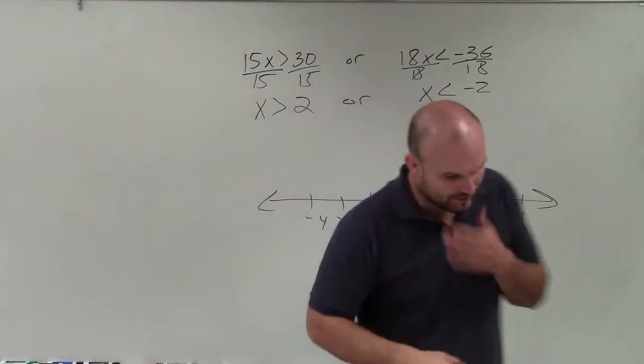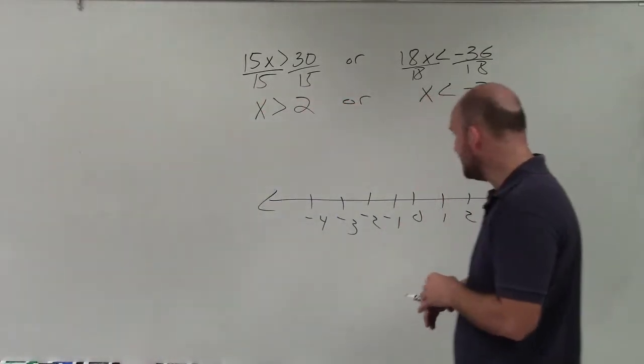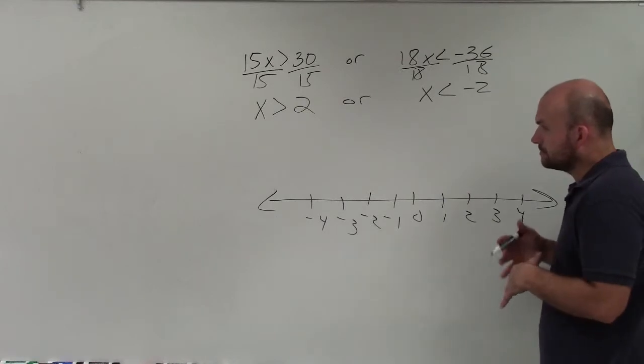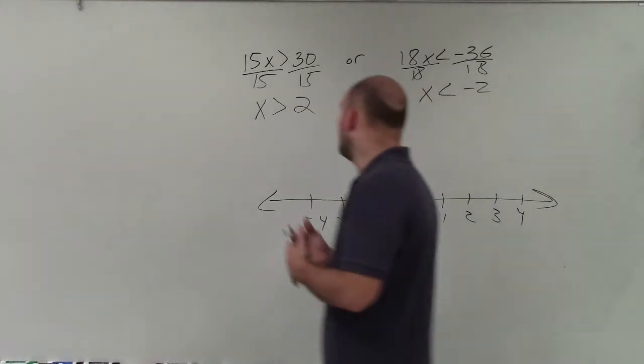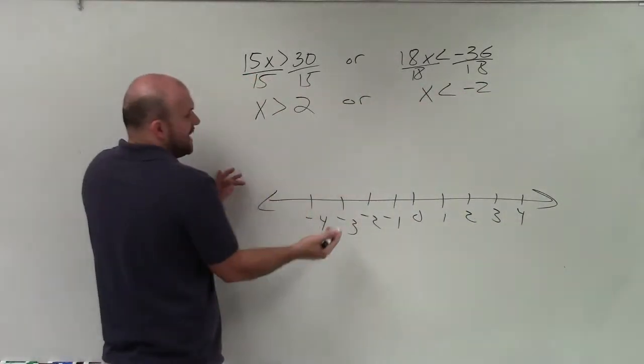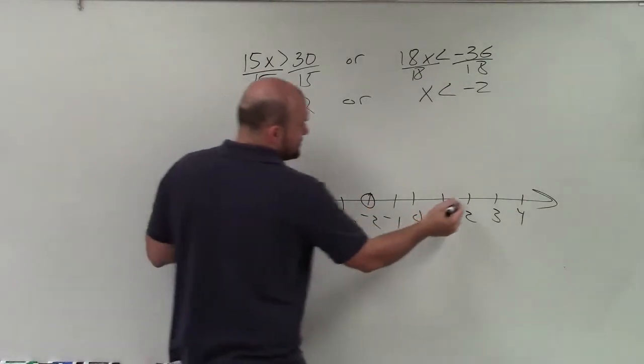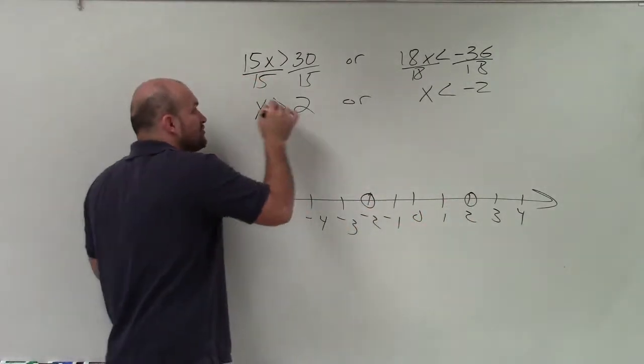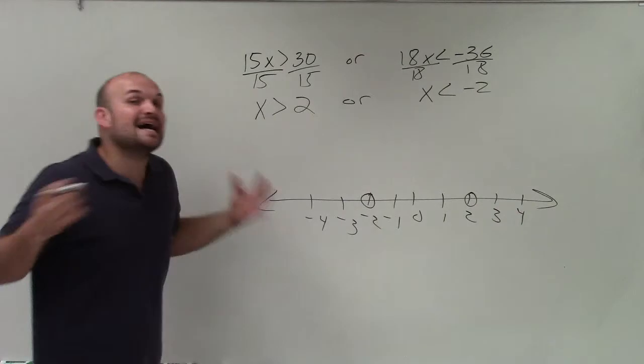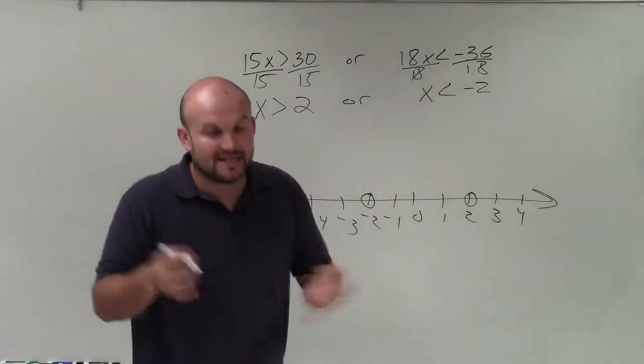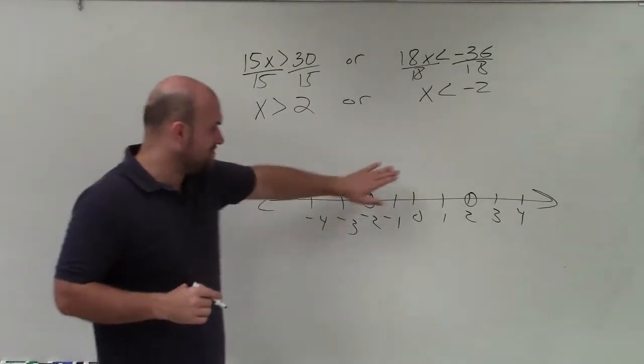OK, so when graphing the solution, basically what we're going to be doing is looking at this and determining, all right, well, at each one of these points, I'm going to have a solution set, right? So I have negative 2 and 2. Now since this is greater than and less than, it's not equal to. So I'm not going to include these points. So I'm not going to shade them in.